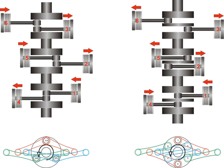Other engine configurations with natural dynamic balance include the straight-six, the straight-eight, the V-12, and the V-16.